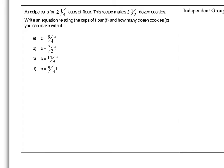We can see all of our equations have C set up as the Y and F set up as the X. So if we're going to write this equation, we need C over F. Since C is our cookies, that puts us at three and a half over two and one-fourth to find our constant of proportionality.